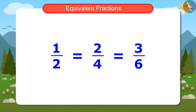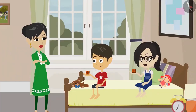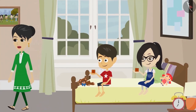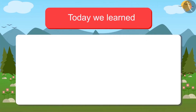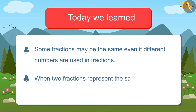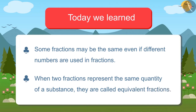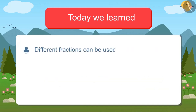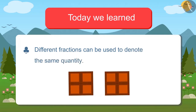When different fractions show the same quantity of a substance, they are called equivalent fractions. You will learn them in detail in further classes. Today we learned that some fractions may be the same even if different numbers are used. When two fractions represent the same quantity of a substance, they are called equivalent fractions. Hence, different fractions can be used to denote the same quantity. For example, in order to represent half of a chocolate, one can write one half and also two fourths.